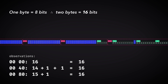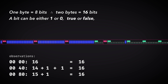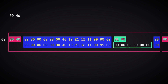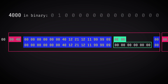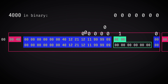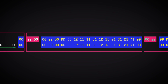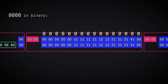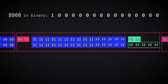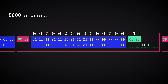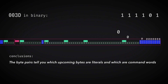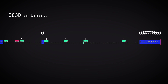Two bytes are 16 bits, and a bit can have two states. Maybe the byte pairs are actually little-endian words read in binary. It looks like the byte pairs indeed tell how to read the next 16 entries: 0 for literal, 1 for command word.